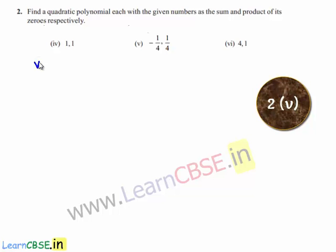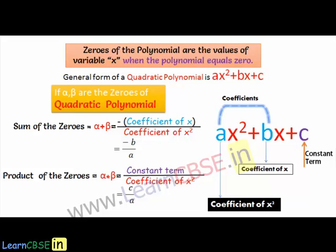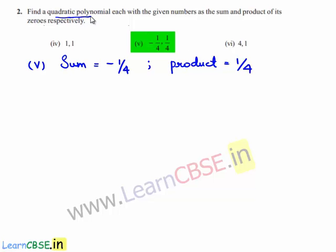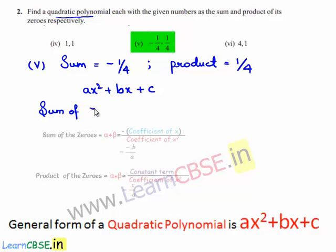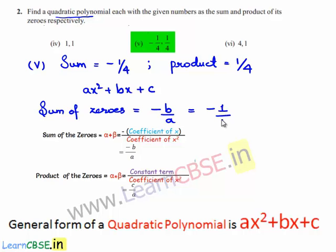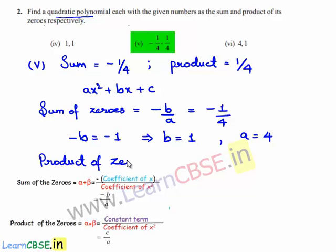Coming to the fifth bit, the given sum of the zeros is equal to minus 1 by 4 and the product of the zeros is equal to 1 by 4. So let us assume the required quadratic polynomial to be Ax² + Bx + C. We know that sum of the zeros is equal to minus B by A, and the given sum of zeros is minus 1 by 4. So by comparison, we can write minus B equals minus 1, that becomes B equals 1, and also A is equal to 4.